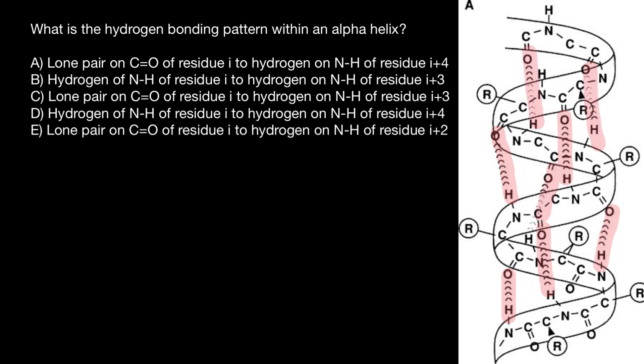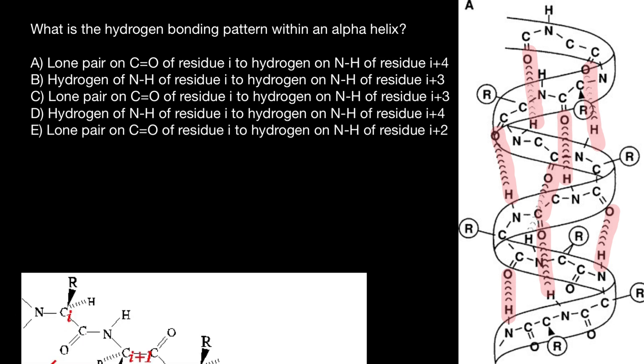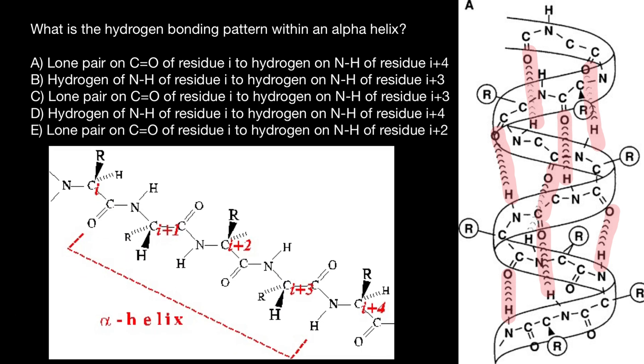But here's another picture which shows you the same alpha helix, but stretched. Every polypeptide starts with N-terminus and ends with C-terminus. So we can say that this amino acid begins here and ends here.